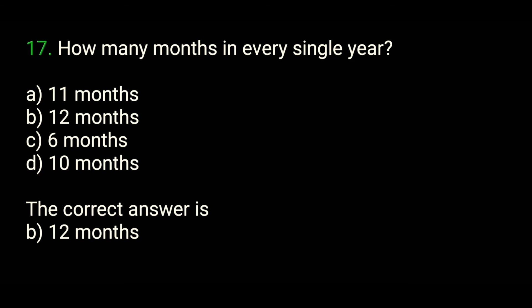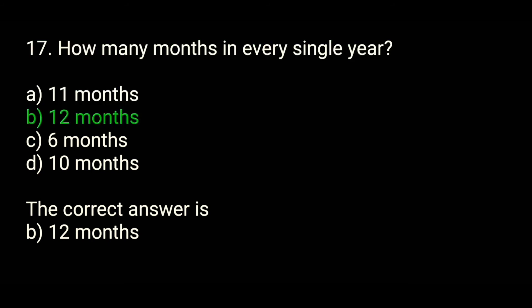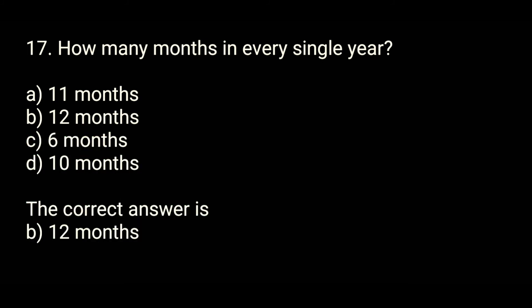Question 17: How many months are in every single year? A. 11 months, B. 12 months, C. 6 months, D. 10 months. The correct answer is B. 12 months.